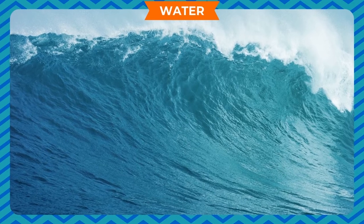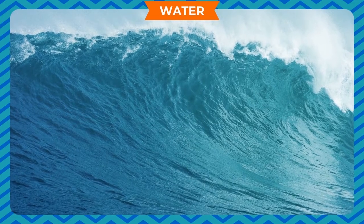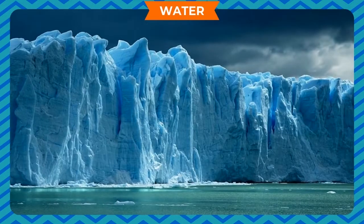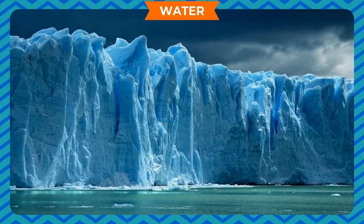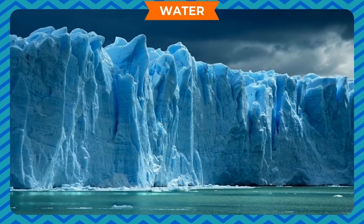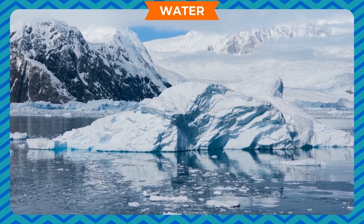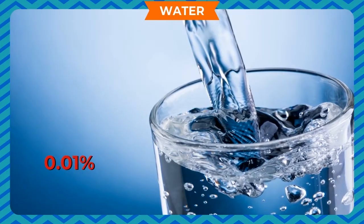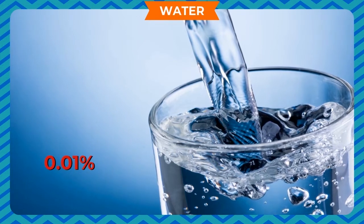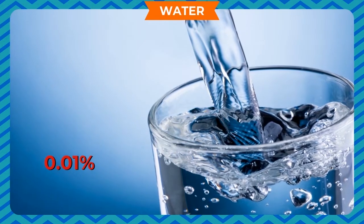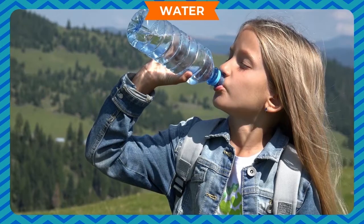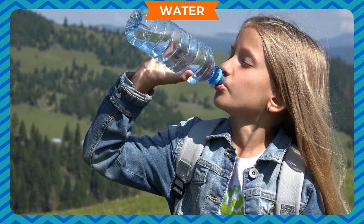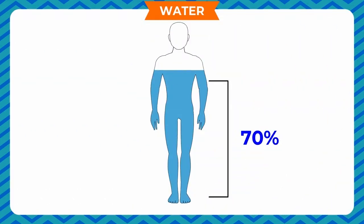Sea and ocean water cannot be used directly by us because of its high salt content. A lot of fresh water is frozen in glaciers and in the polar ice caps. Only 0.01 percent of the water on the earth is available to us for consumption — it is only fresh water that can be used by living beings.